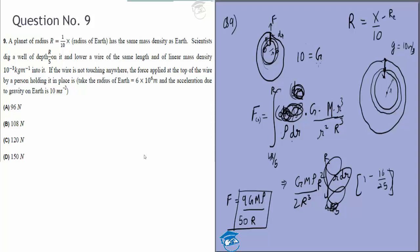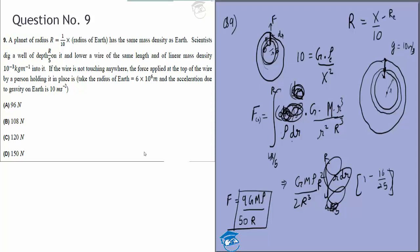So we know 10 equals G times the mass of Earth divided by radius of Earth squared. The radius of Earth is x squared, and the mass of Earth will use ρ_earth here because this ρ is the mass density of the wire.